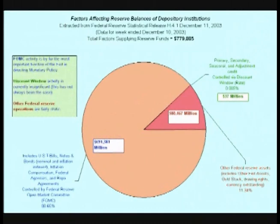The Fed has three main tools it uses to control the level of spending in the economy. The first is changing the reserve requirements for banks. The second is changing the discount rate. And the third is open market operations. Let's look at all three.